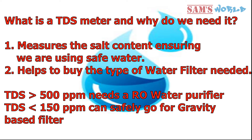So the big question: what is a TDS meter and why do we need it? After gathering information about TDS, we now know how important it is. The TDS meter helps, first, to measure the salt content of our drinking and household water, and second, to determine which water purifier will best suit our water. A TDS level greater than 500 ppm generally indicates you need an RO-based water purifier, while a TDS level below 150 ppm means you can safely go for a gravity-based water purifier.